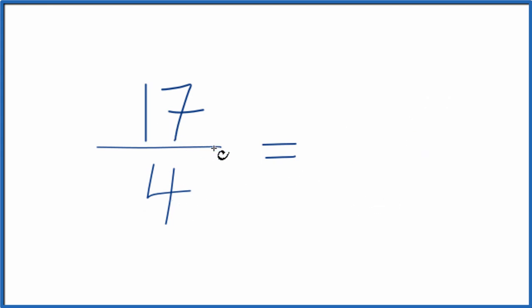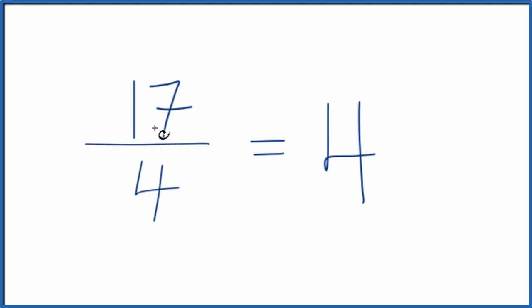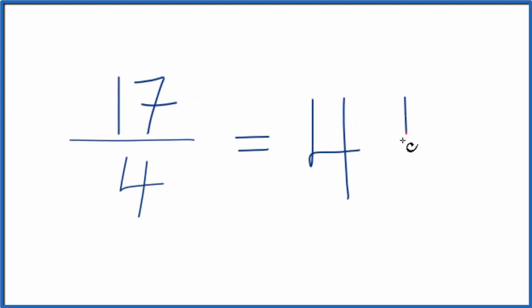So 4 would go into 17 four times. 4 times 4 is 16. So we'd have a remainder there of 1. And then we just bring the 4 across. So 17 fourths, the improper fraction, that equals the mixed number 4 and 1 fourth.